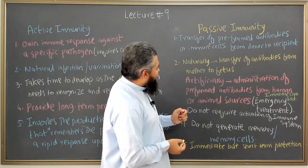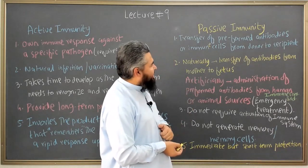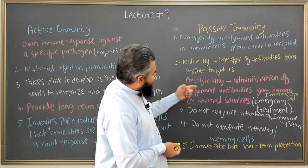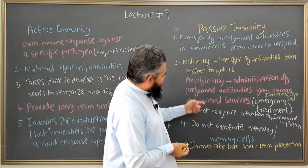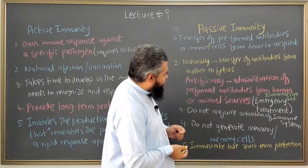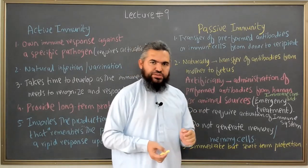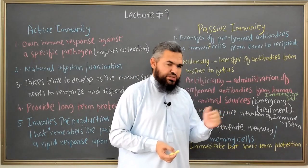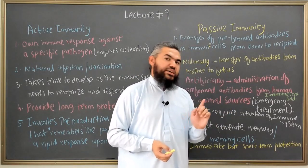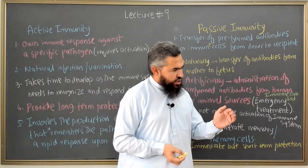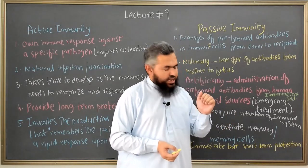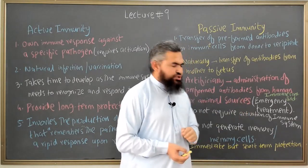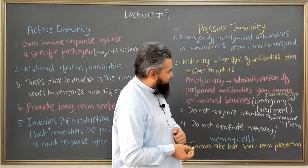Secondly, you can also have an artificial way of getting preformed antibodies. In the artificial form, you administer preformed antibodies from human or animal sources. For example, you inject an animal with a particular pathogen, that animal creates antibodies against that pathogen, you isolate and purify them, and then inject them into the patient. This is the artificial way of getting preformed antibodies.